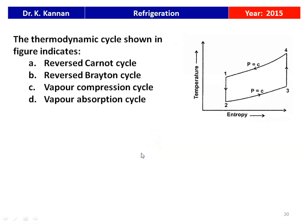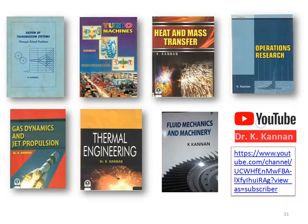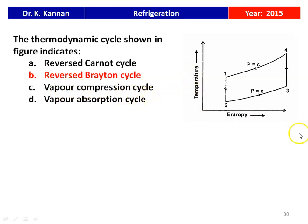The next question is from the 2015 question paper. The thermodynamic cycle shown in the figure indicates: a reversed Carnot cycle, reversed Brayton cycle, vapor compression cycle, or vapor absorption cycle. From the temperature-entropy diagram, it is not a reversed Carnot cycle (which would be a rectangle on a T-S diagram), not a vapor absorption cycle (which has no thermodynamic cycle representation), and not a vapor compression cycle (since the throttling process is not shown). The correct answer is the reversed Brayton cycle.